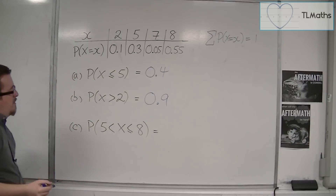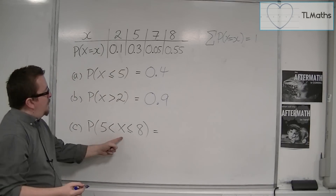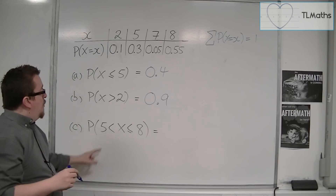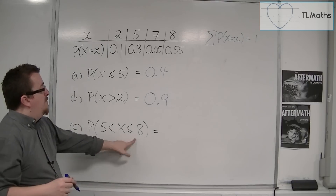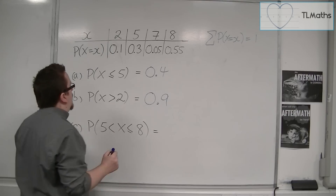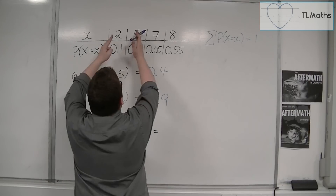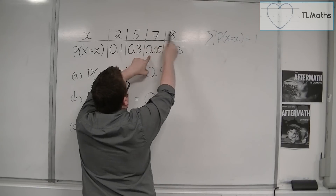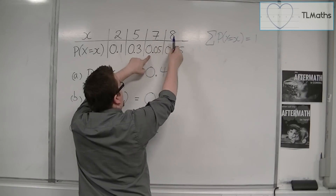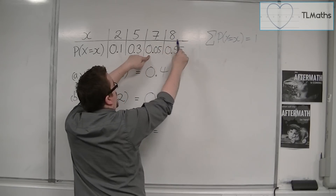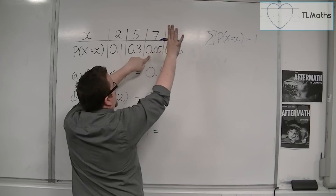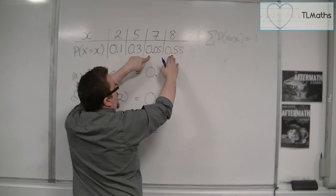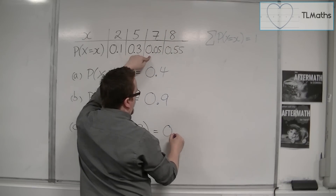If we want the probability of X being between 5 and 8, where we're not including 5 but we are including 8, we don't include 2 or 5, but we do include 7 and 8. So 0.05 and 0.55 makes 0.6.